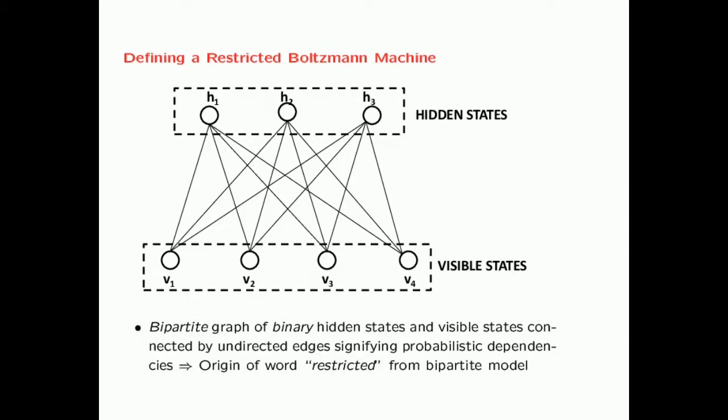When the weight of an edge is strongly positive, for example between H1 and V1, it means H1 and V1 are more likely to be on together. On the other hand, if the weight between H1 and V1 is very strongly negative, it means H1 and V1 are more likely to take on different binary values—if one is a 1, the other will be a 0 and vice versa. This kind of model can be used to create unsupervised models for binary data.